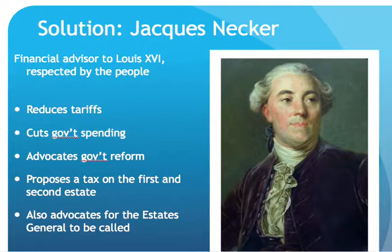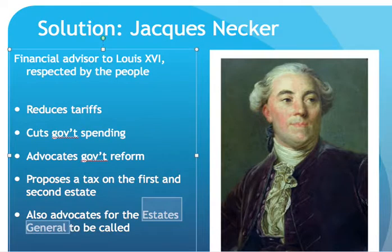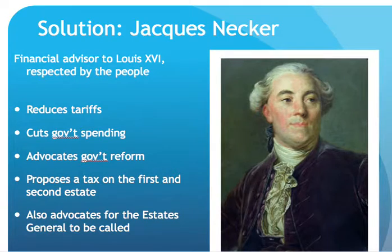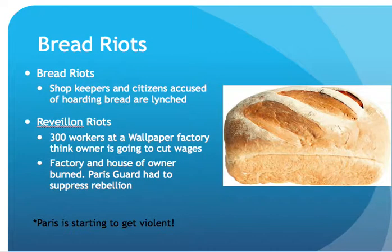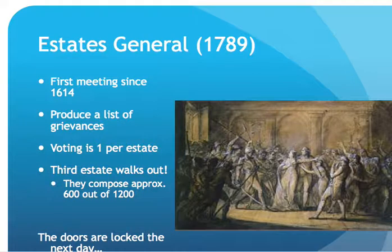To try to alleviate the problems when the third estate started getting really angry, King Louis XVI hired Jacques Necker, who was very popular amongst the third estate, to help with finances. His most significant reform was advocating for the Estates General to be called. The Estates General was a legislative body that Louis and Jacques hoped would address the problems and grant legitimacy to the crown. This came on the back of riots and problems in Paris — laborers and general Parisians who couldn't afford bread — leading to the first meeting of the Estates General since 1614.